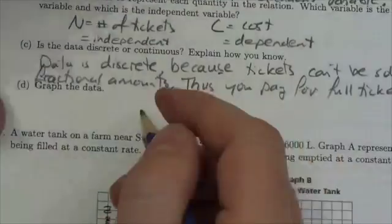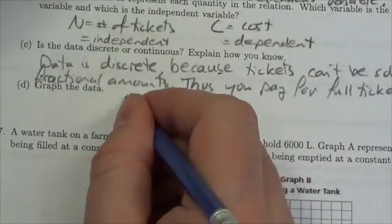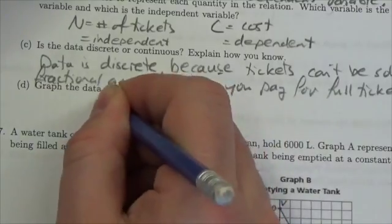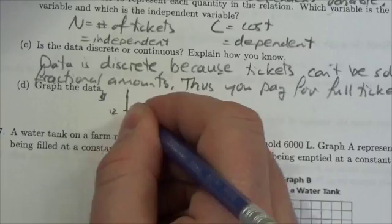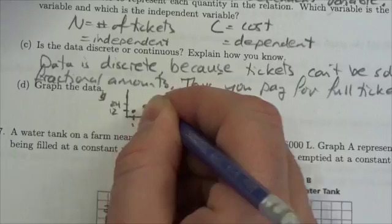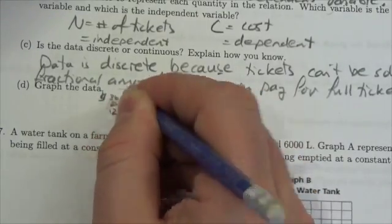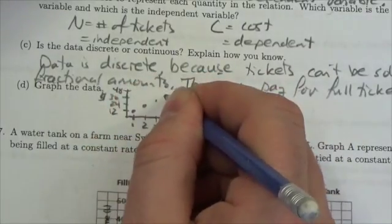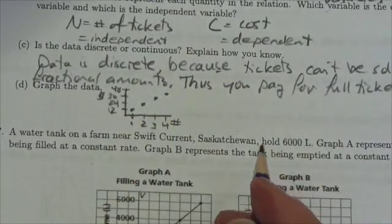So, graph the data. Well, I've only given myself a little bit of room here for this, and that's simply because this is going to look like this. This would be the number of tickets here, this would be the cost, so this would be 1, 12, dot, 2, 24, dot, 3, 36, dot, 4, 48, dot.